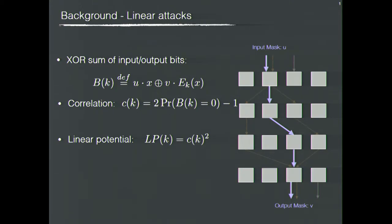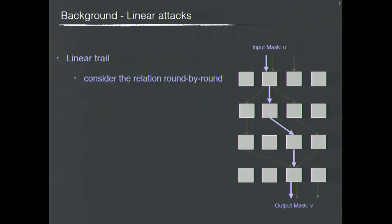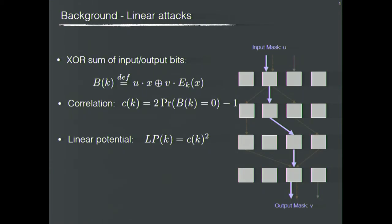If the XOR sum is denoted as BK, then linear attacks exploit how biased BK is — equal to zero or equal to one. The correlation of BK is the most important way to measure how effective a linear attack is. Sometimes people also use linear potential, which is the square correlation.